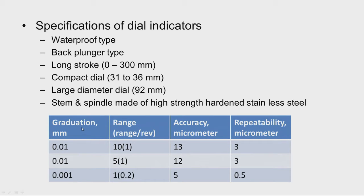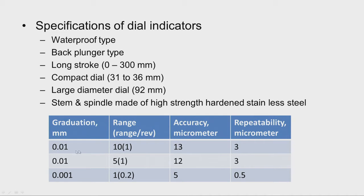Graduations are available in 0.01 mm and 0.001 mm, with ranges of 10, 5, and 1 millimeter. Per revolution, the range is 1 millimeter. The overall accuracy is about 13 microns for 0.01 mm graduation, and 5 micrometers for 0.001 mm graduation. Repeatability is 0.5 to 3 micrometers. Depending on our requirement, we select the appropriate dial indicator.